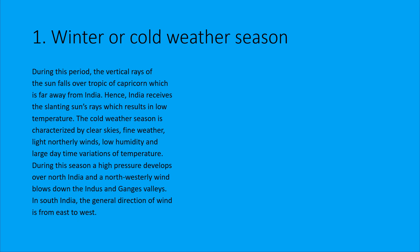The retreating monsoon season is from October to December, when the North-East Monsoon brings rain to the north-east coast. After that comes the cold season. In the cold season the temperature is low, the weather is fine and clear, humidity is low, and high pressure develops in North India with north-westerly winds.